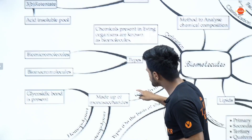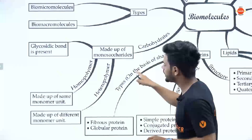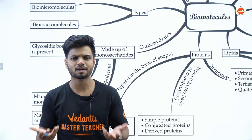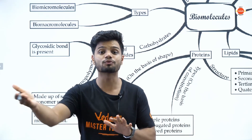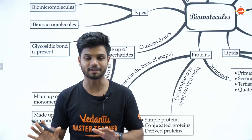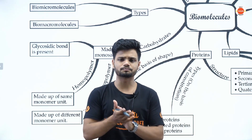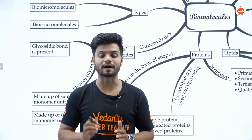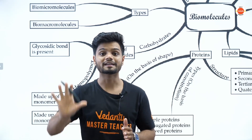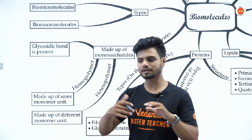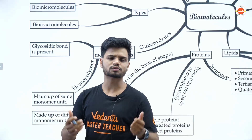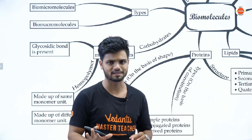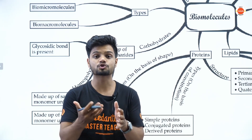The next thing to understand is carbohydrates. Carbohydrates are basically hydrates of carbon — they can have a separate OH bond, an aldehyde group, or a ketone group. Based on classification we have monosaccharides, disaccharides, oligosaccharides, and polysaccharides — essentially based on the number of sugar units present. Monosaccharides have only one unit, for example trioses.